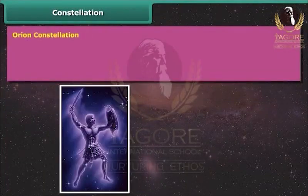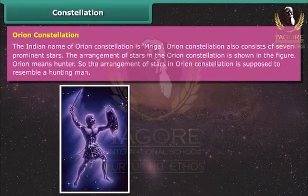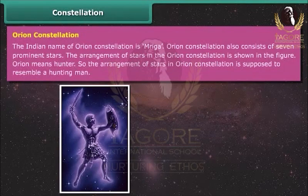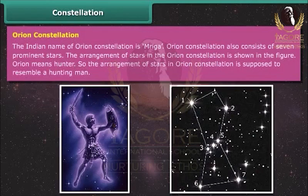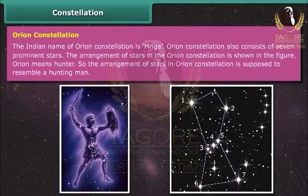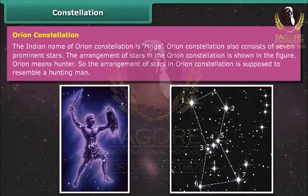Orion Constellation — the Indian name of Orion Constellation is Mriga. Orion Constellation also consists of seven prominent stars. Orion means hunter, so the arrangement of stars in Orion Constellation is supposed to resemble a hunting man.